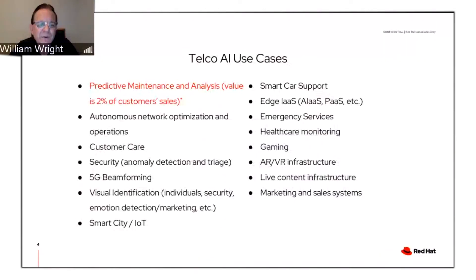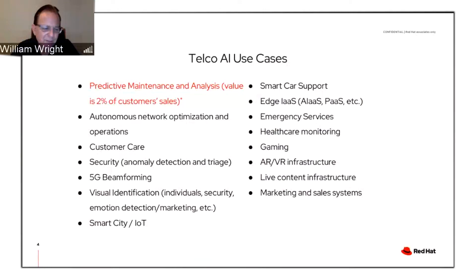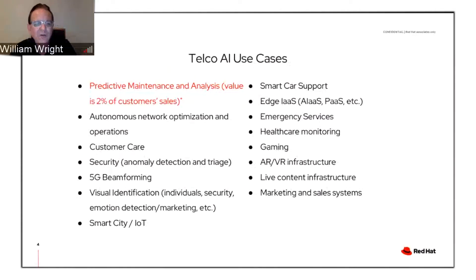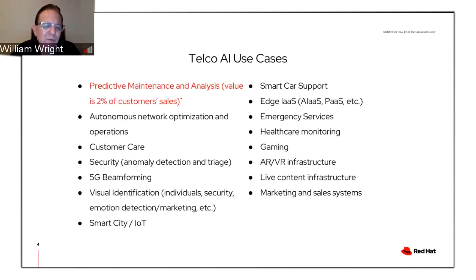In terms of 5G beamforming, that's a very interesting area. An IEEE white paper from around 2018 talked about the use of AI and ML for beamforming activities. This can take two directions: the placement of nodes and the most efficient use of those nodes within a particular region or zone, and also tracking customers moving through nodes and reacting to their position with the beams. They've discovered that machine learning algorithms applied here are actually more accurate than human engineers.